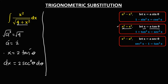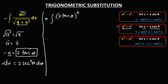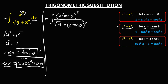We need to substitute these values of x and dx into the given integral. We have the integral of x squared — since x equals 2 tangent theta, that's 2 tangent theta squared — over the square root of 4 plus x squared, where x equals 2 tangent theta, times dx which is 2 secant squared theta d theta.